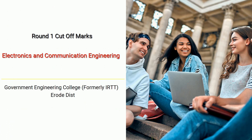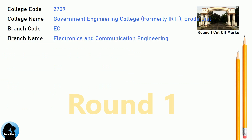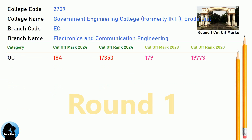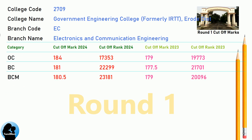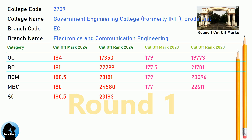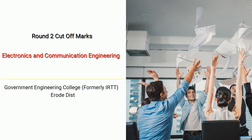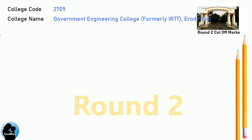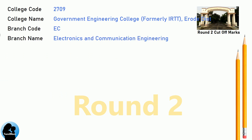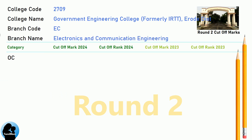DNA Round 1 Cut-Off for Government Engineering College, formerly IRTT, Erode District in Electronics and Communication Engineering. DNA Round 2 Cut-Off for Government Engineering College, formerly IRTT, Erode District in Electronics and Communication Engineering.